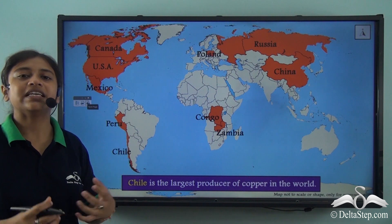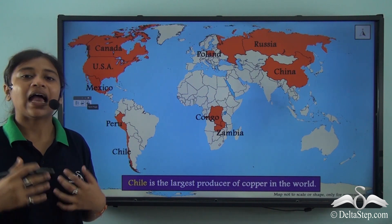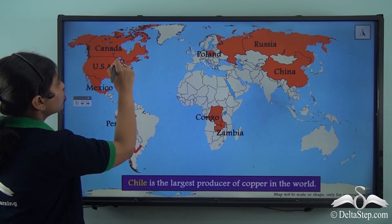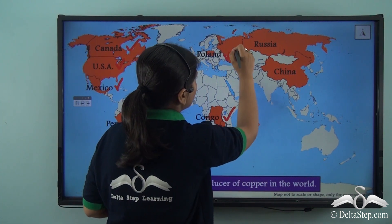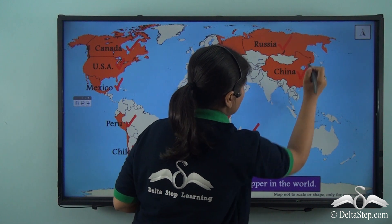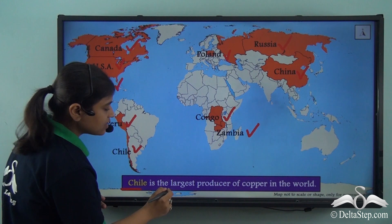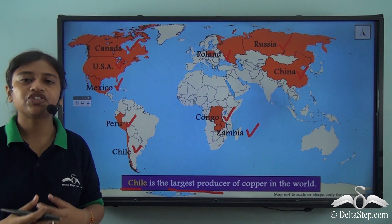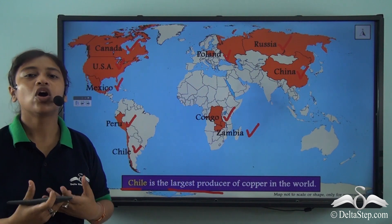Globally, Copper is produced in many countries including Chile, Peru, Mexico, USA, Canada, Congo, Zambia, Poland, Russia and China. Out of all these countries, Chile is the largest producer of Copper in the world. However, Peru is believed to exceed the production of Chile very soon because of the Chinese investments in Peru's Copper industries.